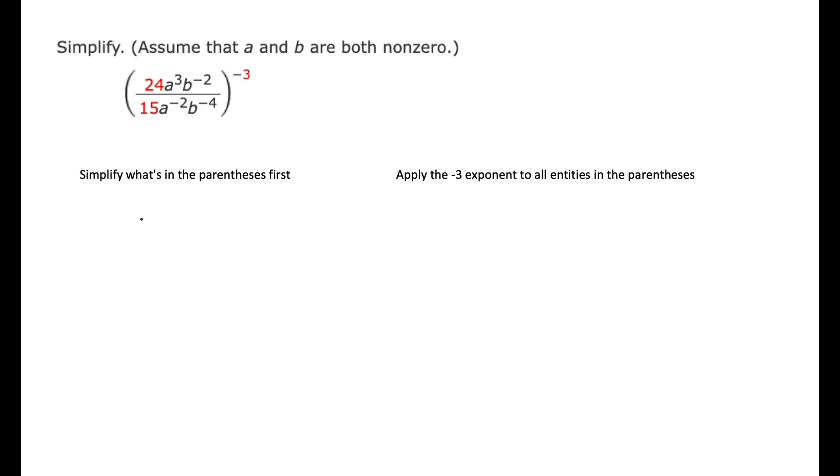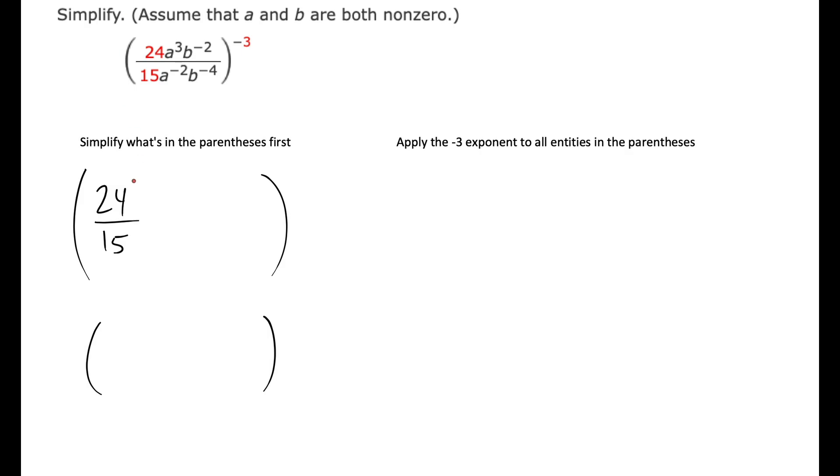If I was simplifying what's in the parentheses first, we'll try to reduce. I'll also use the subtraction rule of exponents on the A's because they're alike, and then I'll do the subtraction rule on the B's as well. To reduce the fraction, you want to divide both the top and bottom by a common factor such as 3. 24 over 3 would be 8, and 15 over 3 is 5.